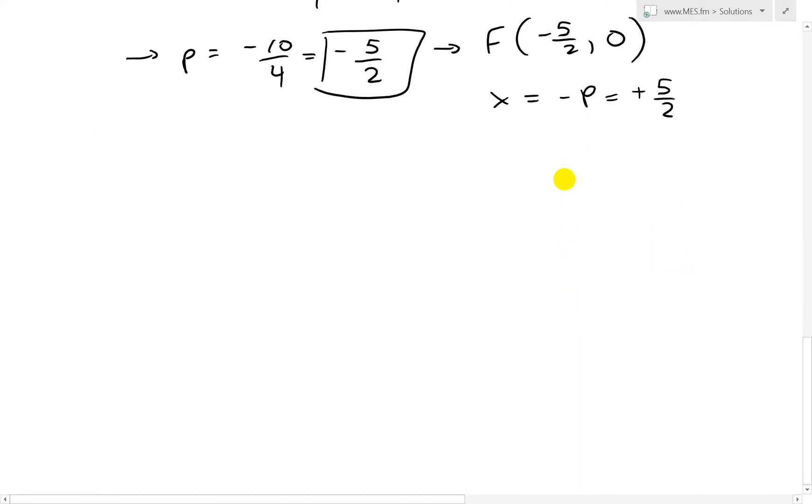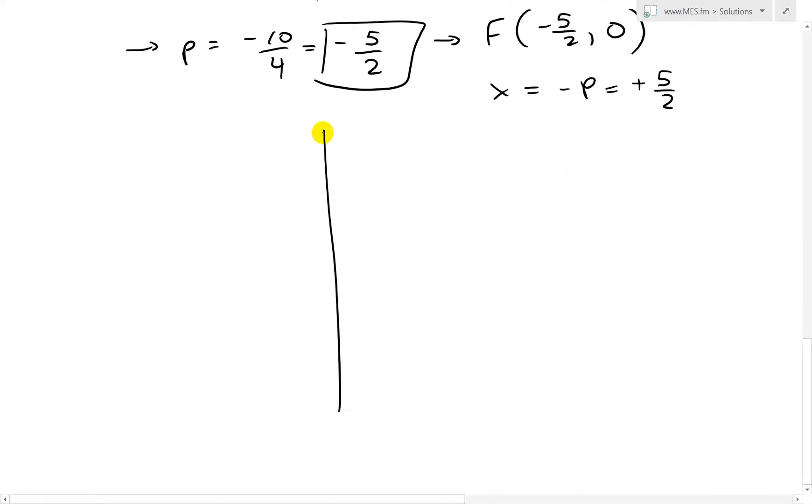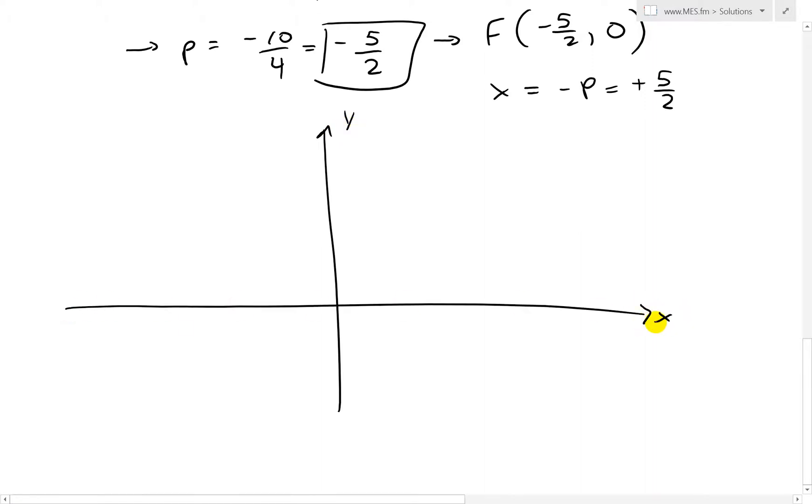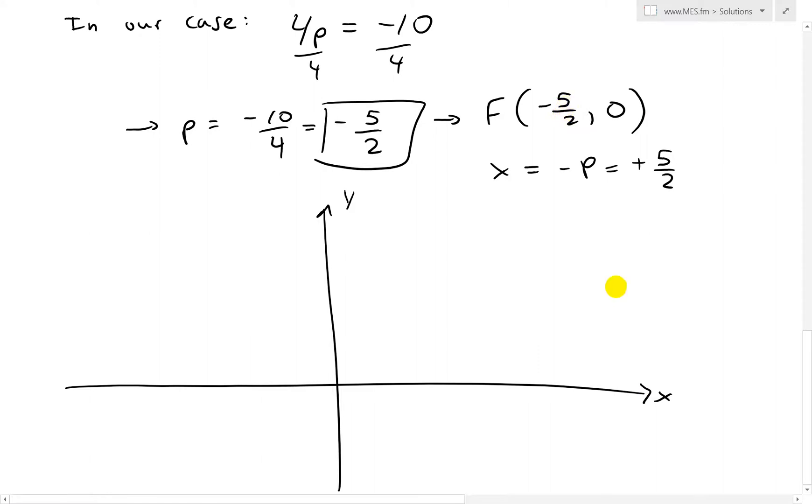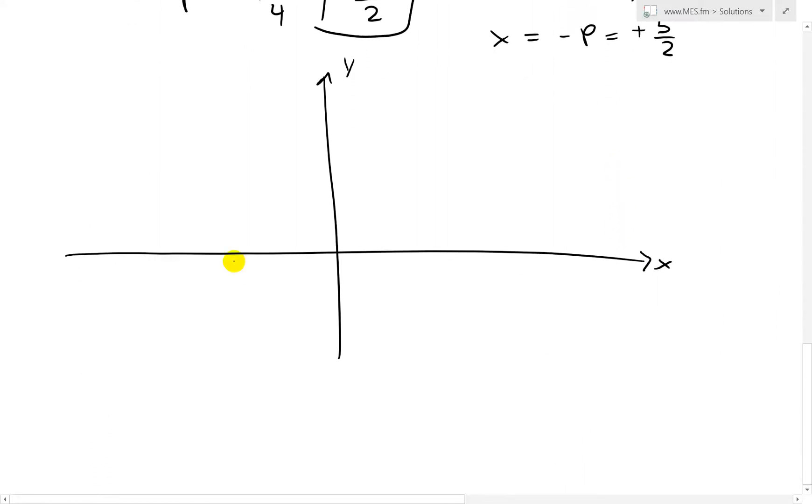So then if we were to graph this out, we get, now this is the y-axis, this is now the x-axis like that. So the focus is at (-5/2, 0), so I'll go somewhere here. This is our focus like that, and it's going to be (-5/2, 0).